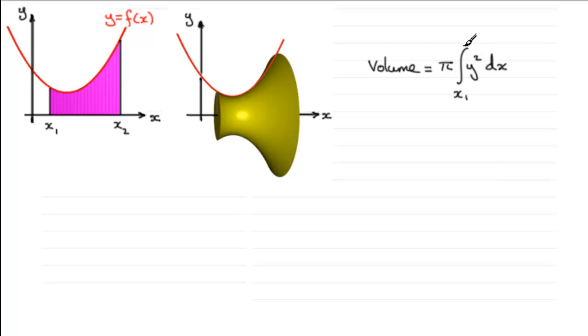going between the limits x1 to x2. So we've got our limits there, x1 to x2. Now I'm giving you this formula here without any proof. But in a later video, what I'll do is I'll show you how it is derived. But for now, what I want to do is just show you how we can use it.